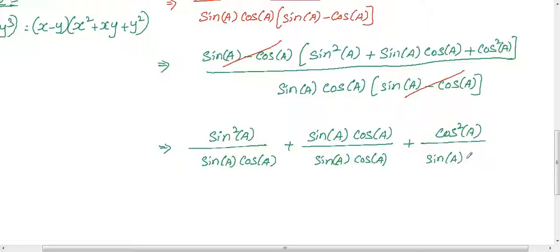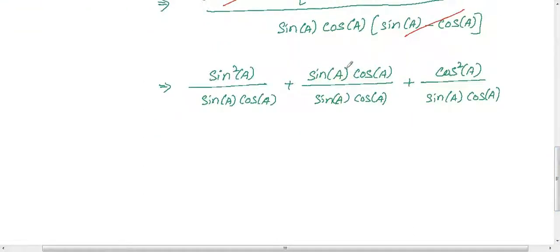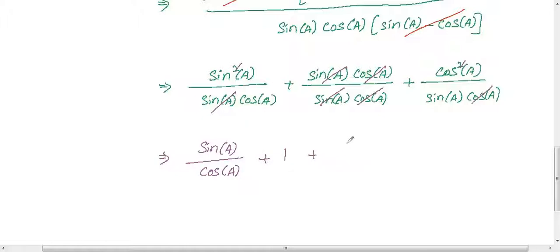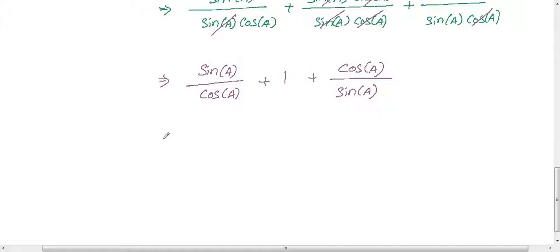In the first term, sin squared a divided by sin a cos a simplifies to sin a divided by cos a. Sin a cos a divided by sin a cos a cancels out to become 1. And cos squared a divided by sin a cos a gives cos a divided by sin a. Since sin a by cos a is tan a and cos a by sin a is cot a, we get tan a plus 1 plus cot a.